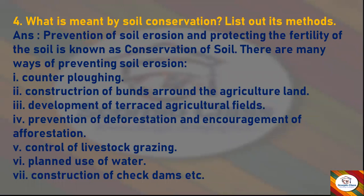Next question: What is meant by soil conservation? List out its methods. Answer: Prevention of soil erosion and protecting the fertility of the soil is known as conservation of soil. There are many ways of preventing soil erosion, like contour plowing, construction of bunds around agricultural land, development of terraced agricultural fields, prevention of deforestation, encouragement of afforestation, and control of livestock grazing.